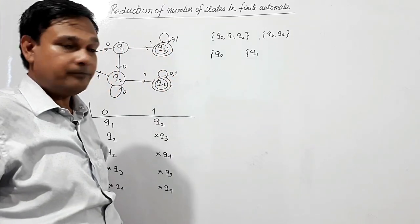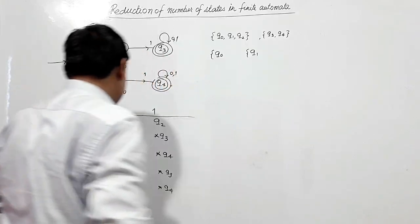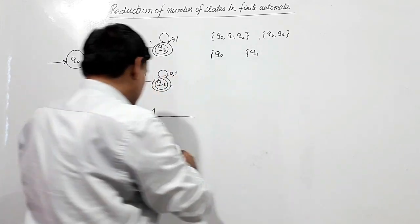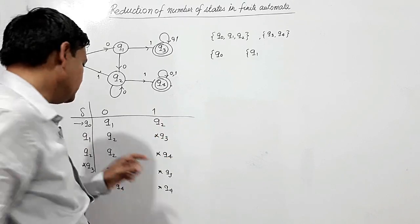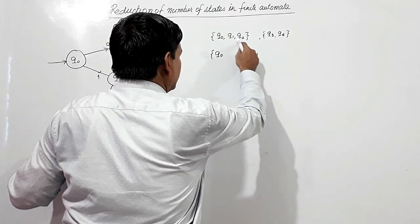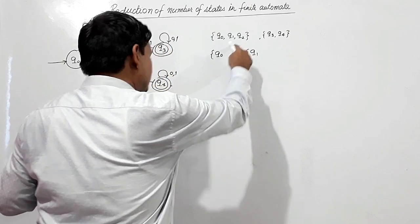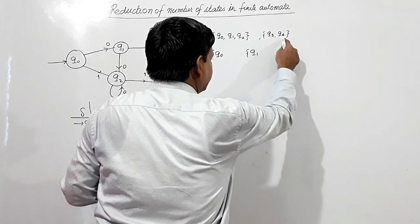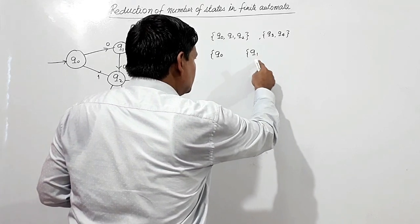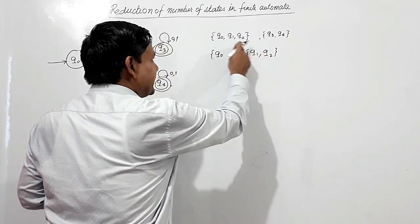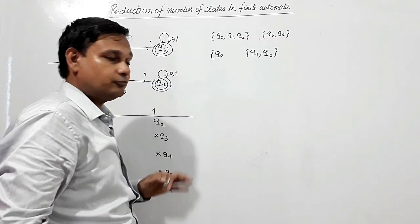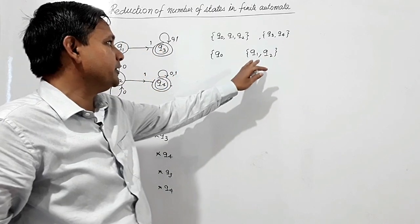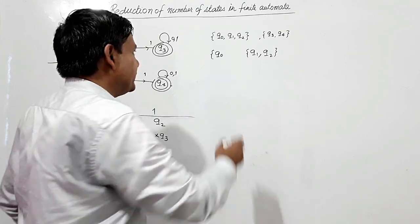So can Q1 and Q2 be in the same set? Q1 on 0 goes to Q2, which is in this set, and Q2 on 0 also goes to Q2, which is in this set. On 1, Q1 goes to Q3 and Q2 goes to Q4, both of which are in the final states set. So on 0 both go to this set and on 1 both go to this set — that is why Q1 and Q2 are kept in the same set, while Q0 is a single separate state.